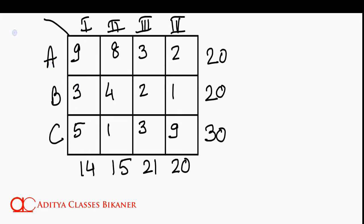We have three sources A, B, and C. Then we have four destinations: first, second, third, and fourth.